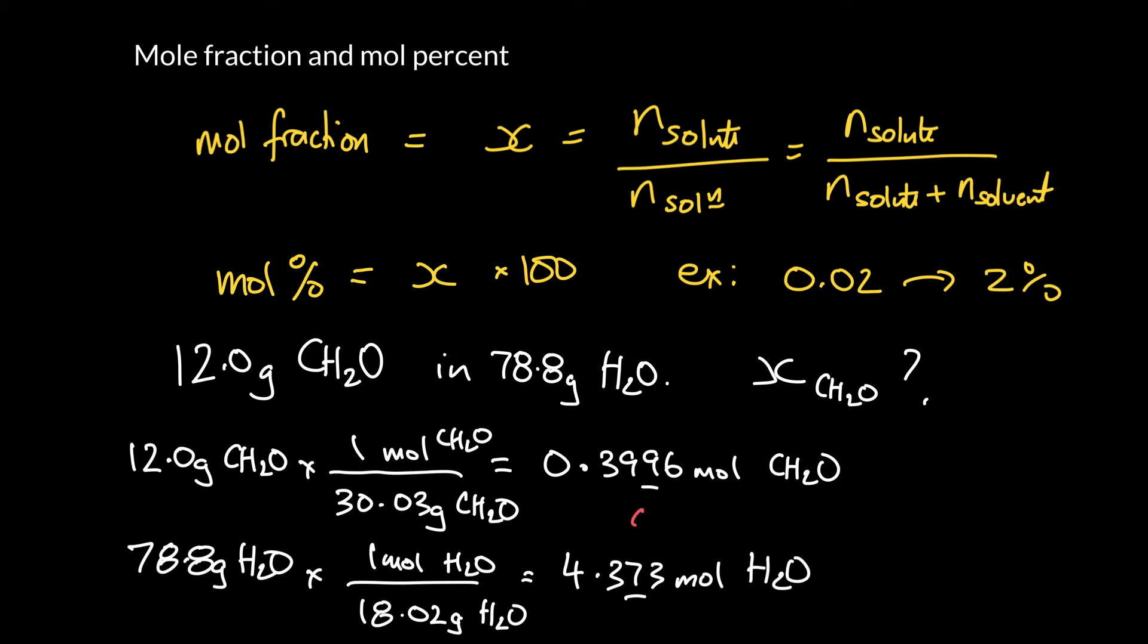And if we want the mole fraction of the formaldehyde, we're just taking the moles of formaldehyde. And we are dividing that by the total moles of solution. So the solution has formaldehyde and it has water. So we can see the water is the biggest component. So if you forgot about the formaldehyde, it wouldn't make a dramatic difference here. But again, we shouldn't really do that. So the mole fraction then is 0.0837.